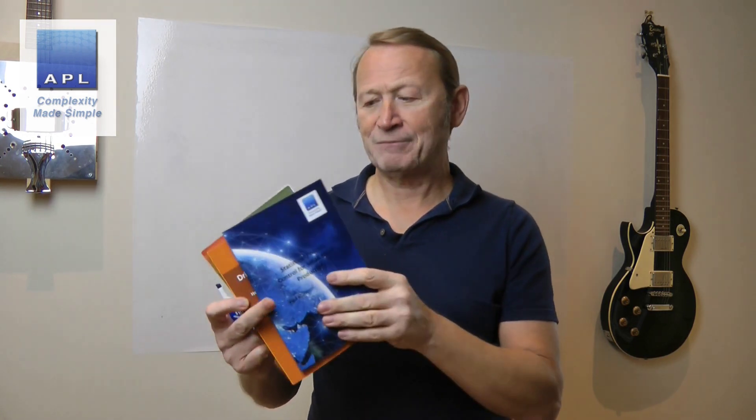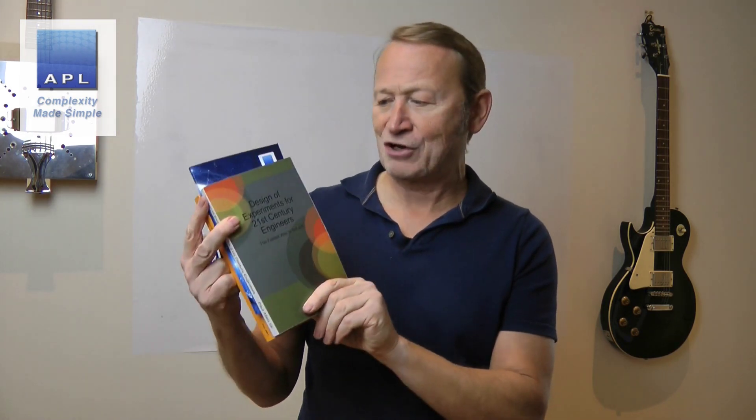But before we do that, just a reminder about my new book Statistical Process Control for Small Batch Production, just released this week. You can get it from lulu.com. You can also get my Green Belt Black Belt book - how to turn your Black Belt skills into money-making capability. And if you want to get world-class at design of experiments, we've got Design of Experiments for 21st Century Engineers. It would be fantastic to receive your support.